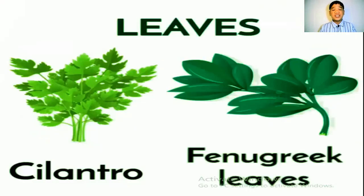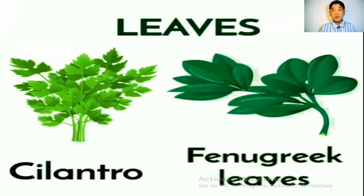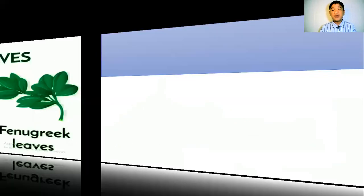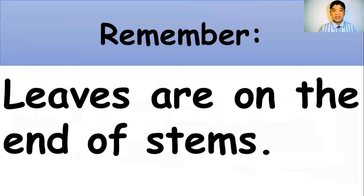Some leaves can be eaten and some leaves cannot be eaten. Cilantro and fenugreek leaves are examples of leaves we can eat. I know that Thai people and even us foreigners really love to eat those herbs. Always remember that leaves are on the end of the stems.